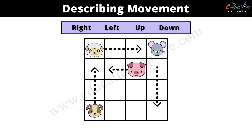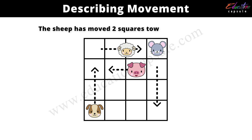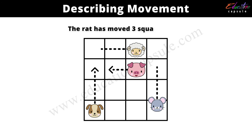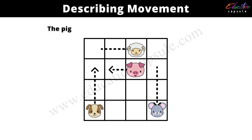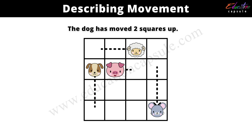Number one: the sheep has moved two squares to the right. Number two: the rat has moved three squares down. Number three: the pig has moved one square towards the left. Number four: the dog has moved two squares up.